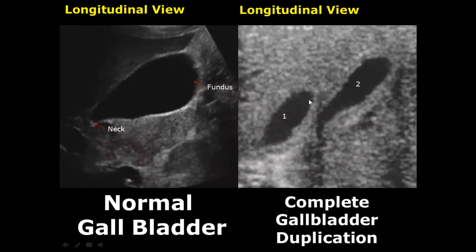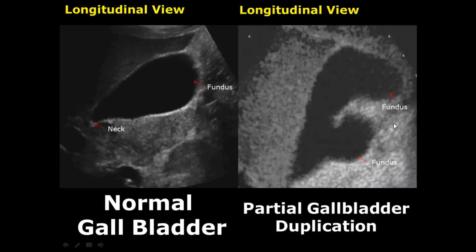Duplication of the gallbladder can occur. Here you can see two separate gallbladders in this image. In partial duplication of the gallbladder, the body and neck are common, but here you can notice one fundus over here and another fundus over here.